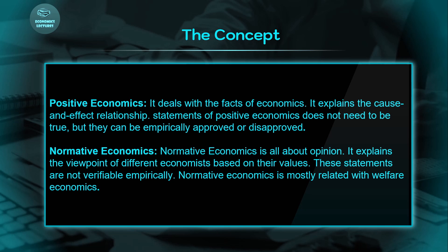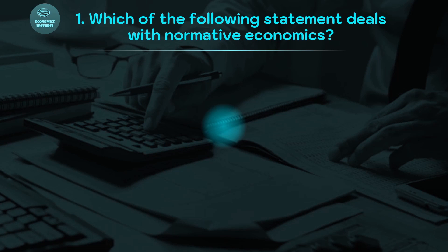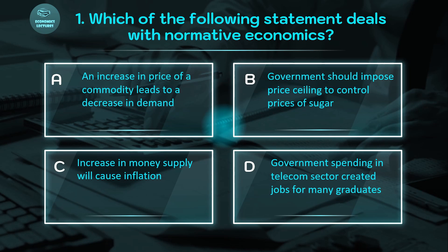Let's go back to the question: which one of the following statements deals with normative economics? Option A: increase in price of a commodity leads to decrease in demand — price increases, quantity demanded decreases, this shows cause and effect. Option C: increase in money supply will cause inflation — if money supply increases, inflation occurs, again a cause and effect relationship. Option D: government spending in the telecom sector created jobs for many graduates — cause was government spending, effect was jobs created for many graduates.